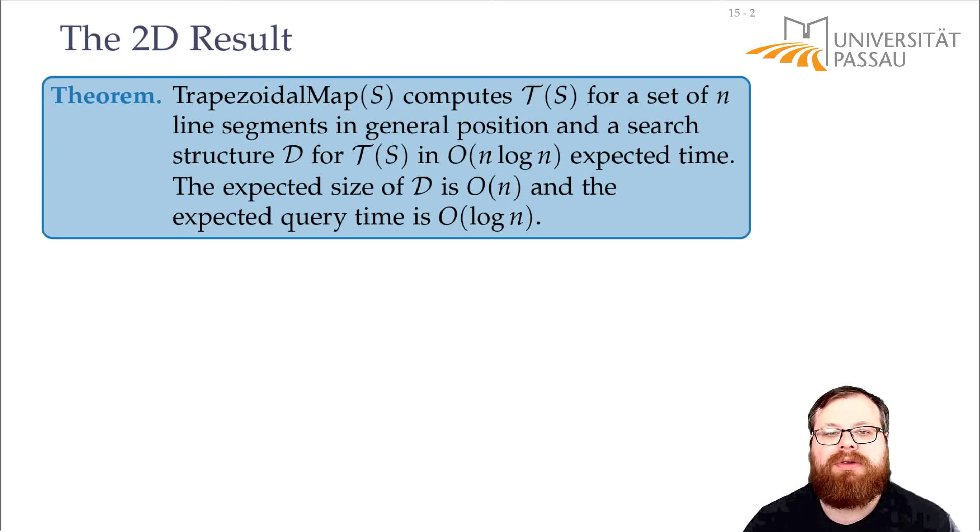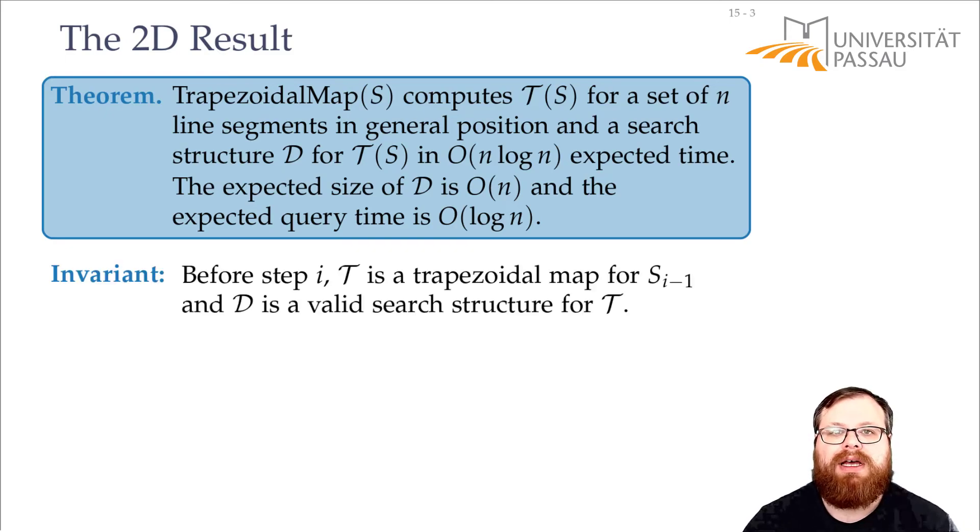But first we want to show that it is correct. And for that we need some invariant. The invariant tells us that before step i, this is always a trapezoid map for our segments Si minus 1, and D is a valid search structure for T.